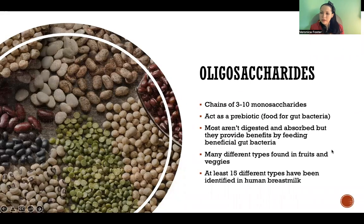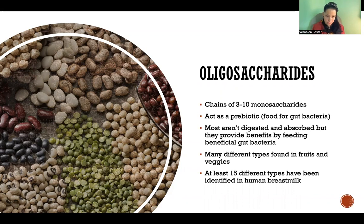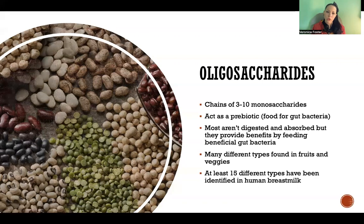An oligosaccharide is a chain of three to ten monosaccharides. We actually don't digest and absorb these, so they don't really have an effect on our blood glucose. But they are still good for our health — they act as a prebiotic, meaning that even though they're not supplying us with energy or nutrition, they supply our beneficial gut bacteria with nutrition. We eat them, and it feeds our gut bacteria, which is very healthy. They're found in fruits and vegetables, and several have also been found in human breast milk.